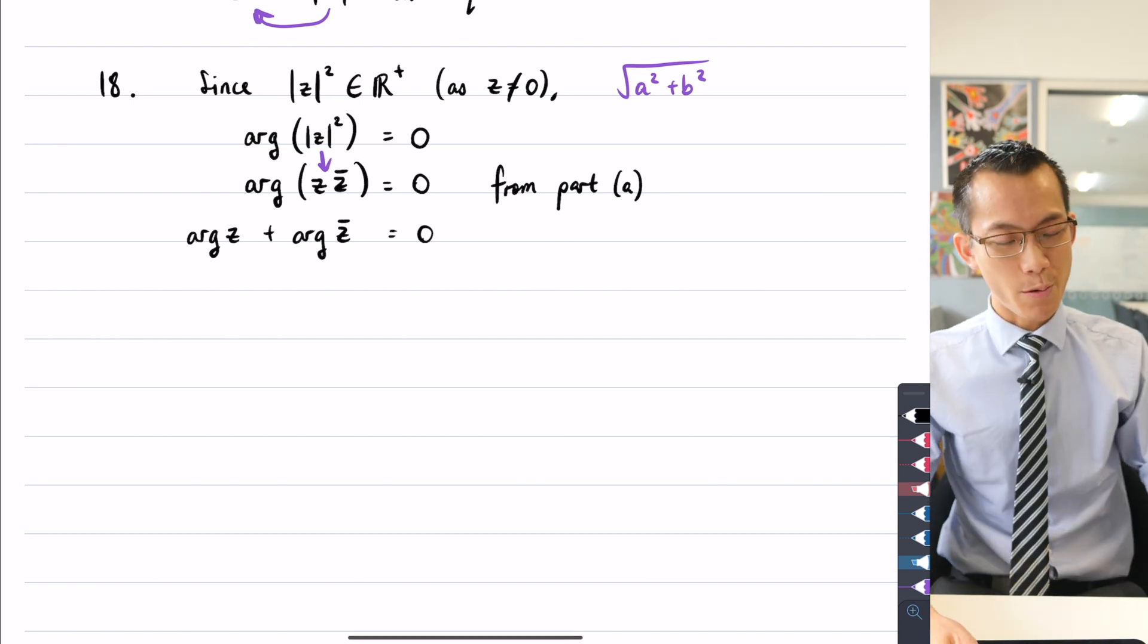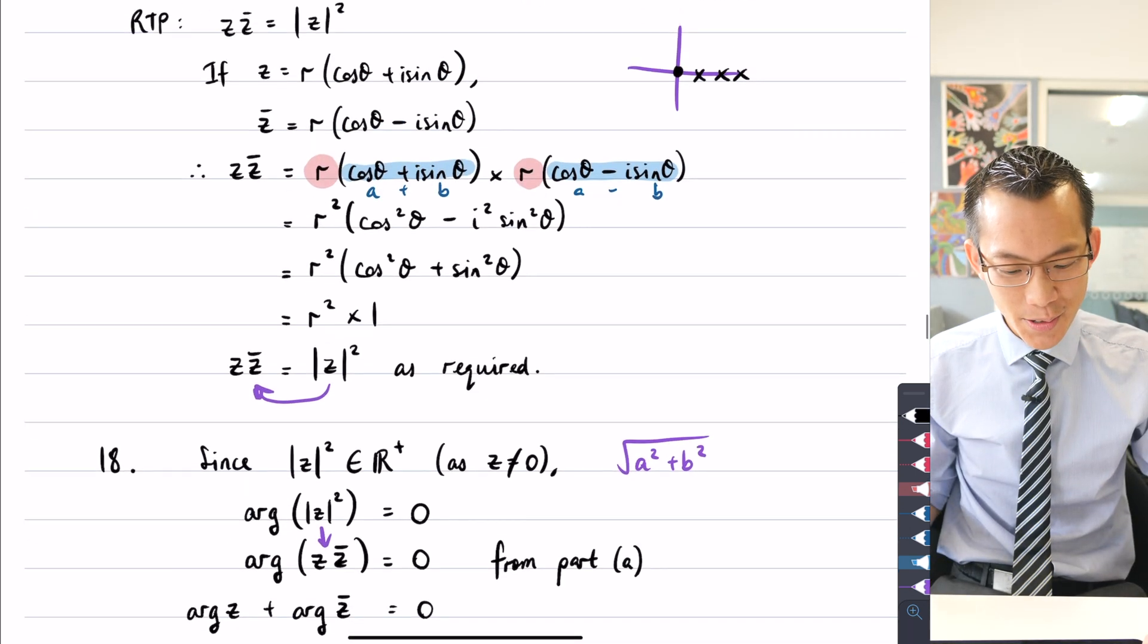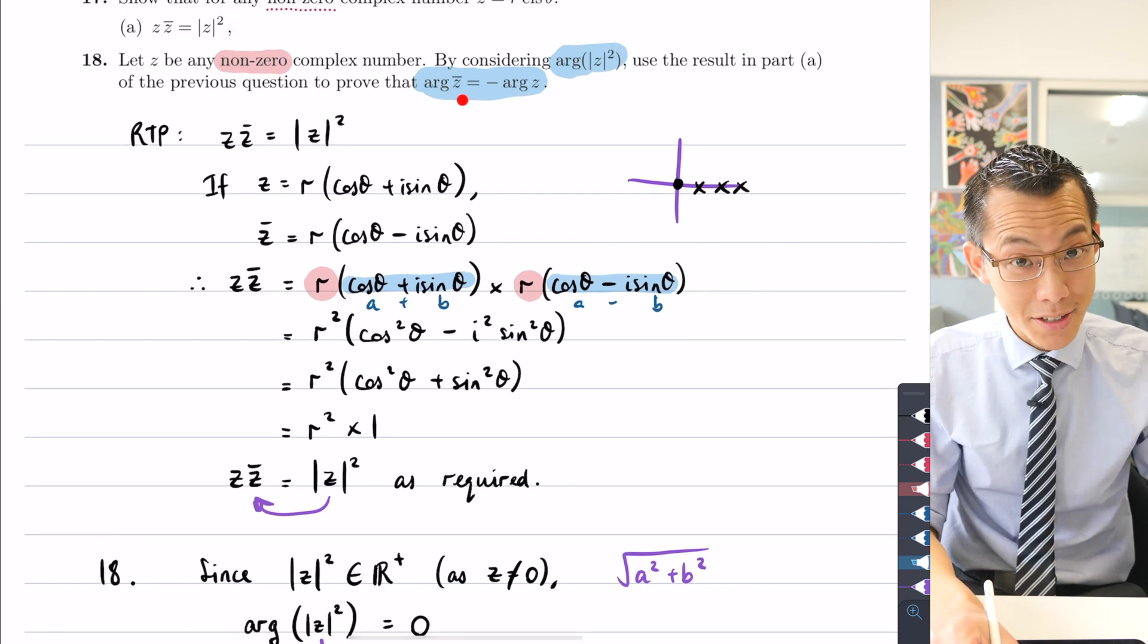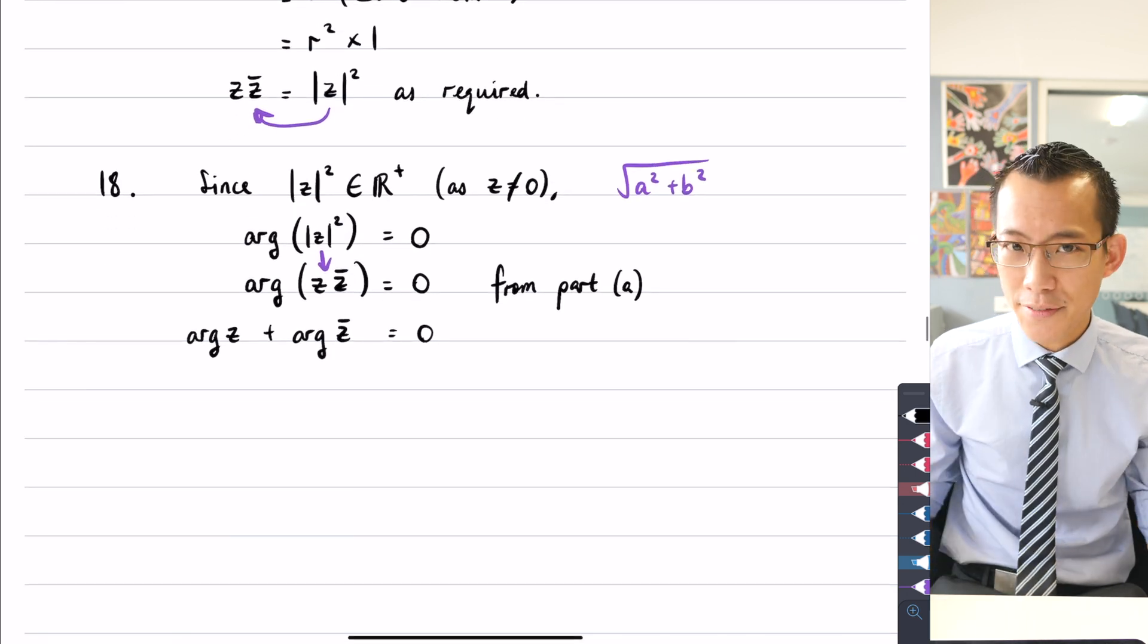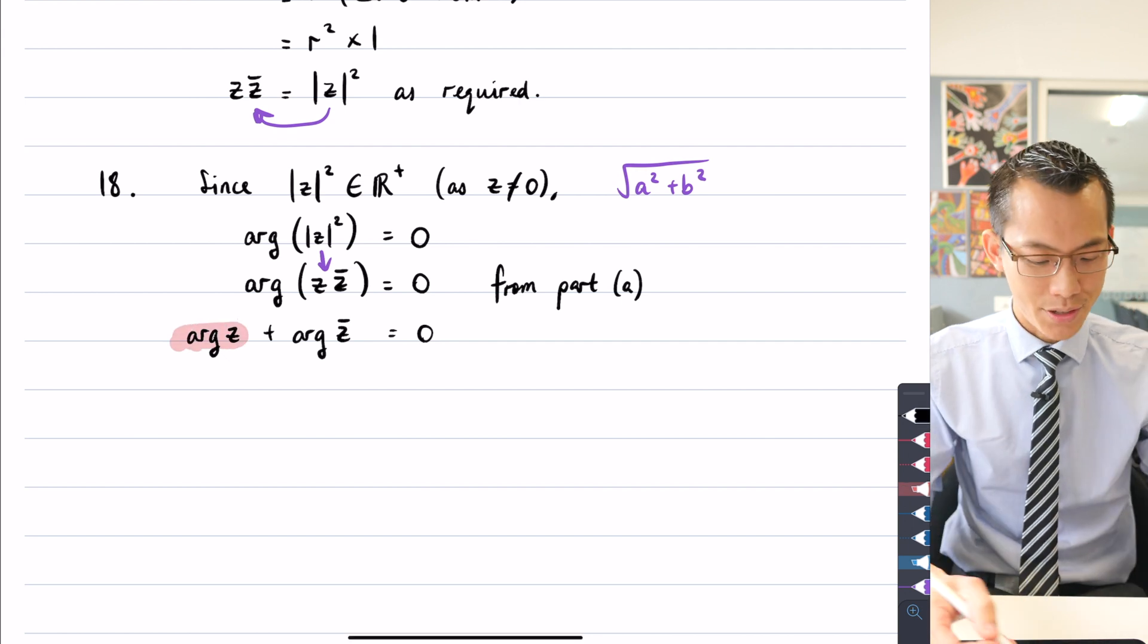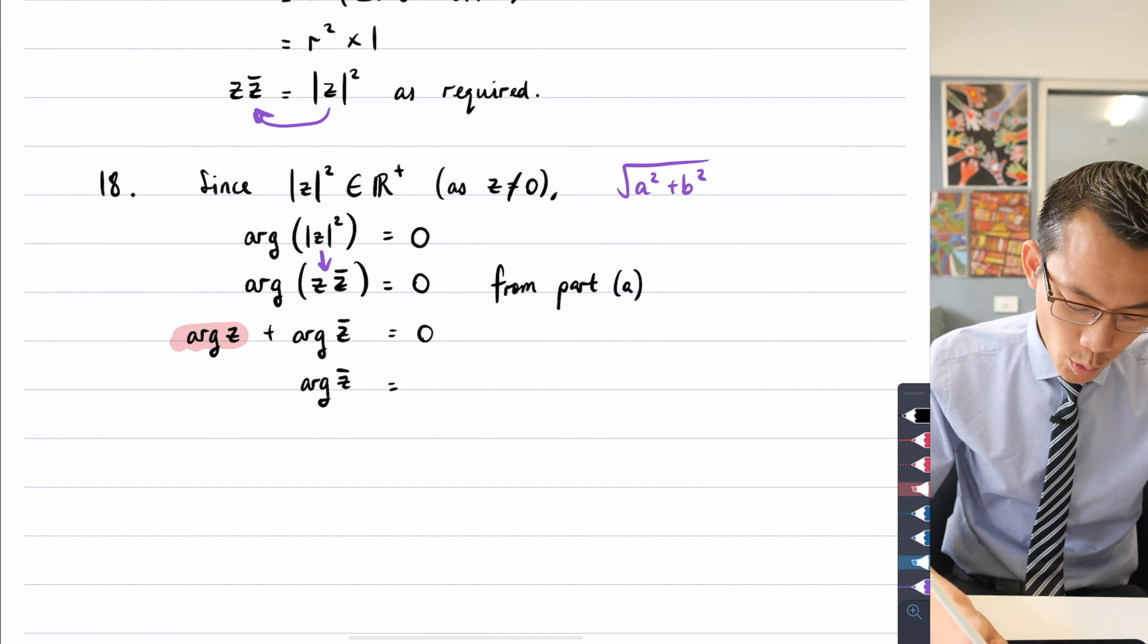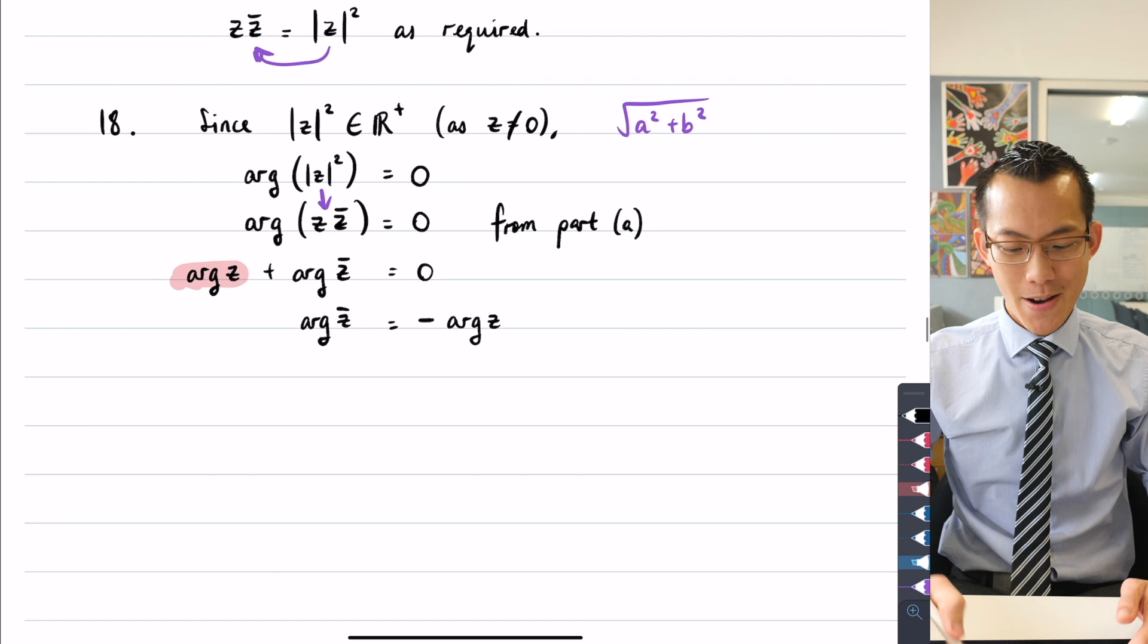Can you see what I'm trying to do? I want to prove that arg of the conjugate of z equals minus arg z, but I'm only one line away from that. All I have to do is subtract this arg z from both sides. So I am going to do that. Arg of the conjugate of z equals minus arg of z as required.